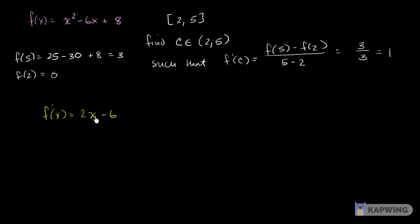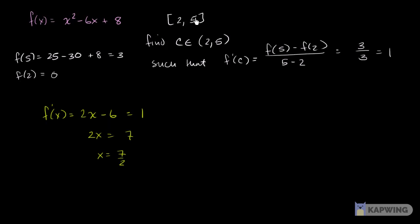f prime of x is equal to 2x minus 6. We need to find the x value within this open interval where it equals 1. So 2x minus 6 equals 1. Add 6 to both sides: 2x equals 7, so x equals 7 halves, which is 3 and a half. That's definitely in this interval. So we've just found our c: c equals 7 halves.